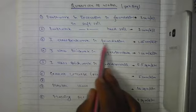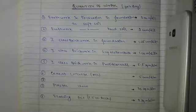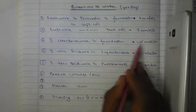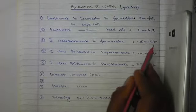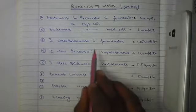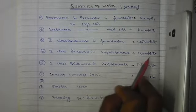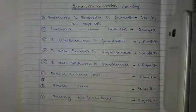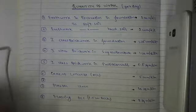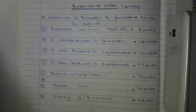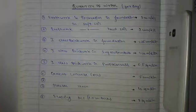First class brick work in foundation: 1.25 cubic meters a labor can do in one day. First class brick work in superstructure: one cubic meter per day per mason, because superstructure needs finishing work also. First class brick work in partition wall: 5.5 square meters a mason can do per day.